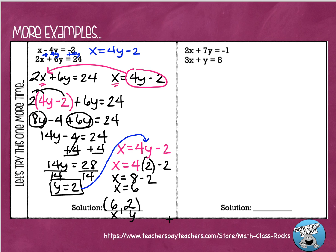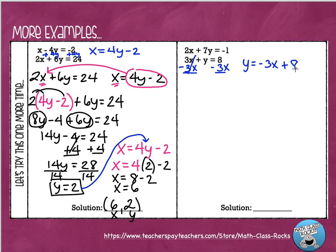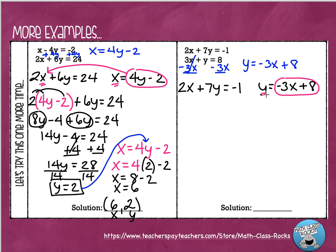If you want to stop the video now and try the last one on your own, that would be a great idea. You can hit start when you're ready to check it, or you can stay with me and we'll do this last one together. I'm going to solve one of these for a variable — find a plain variable. Here it is in the second one: I've got this y all by itself, so let's move the 3x over to the other side by subtracting 3x on each side. That makes the second equation y equals negative 3x plus 8. I'm going to copy my two equations down side by side: 2x plus 7y equals negative 1, and y equals negative 3x plus 8. I'm going to take this expression — the value of y — and put it here in place of y.